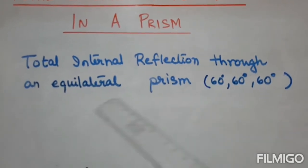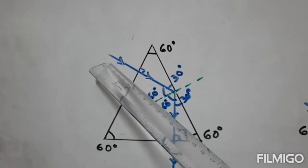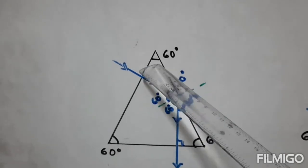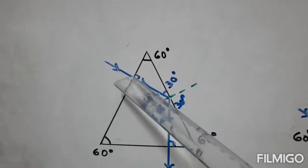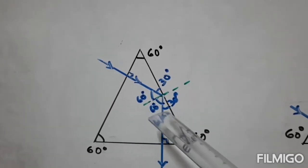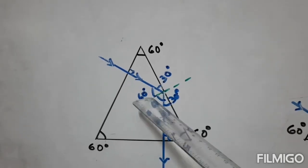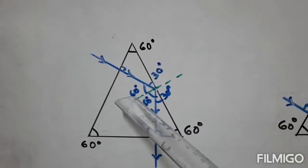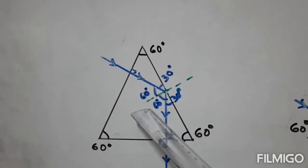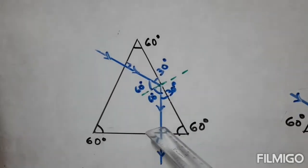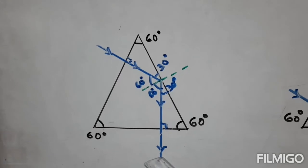Total internal reflection through an equilateral prism with angles 60°-60°-60°. In the first case, the ray of light is incident at the vertex of the prism at right angle, passes undeviated, and strikes the second surface. The angles are 60°, 90°, 30°. If this is 30° this will be 60°, so it undergoes total internal reflection since 60° is more than the critical angle of 42°. The angle of reflection is also 60°, therefore this angle is 30°. The ray strikes the third surface at right angle and passes undeviated outside the prism.